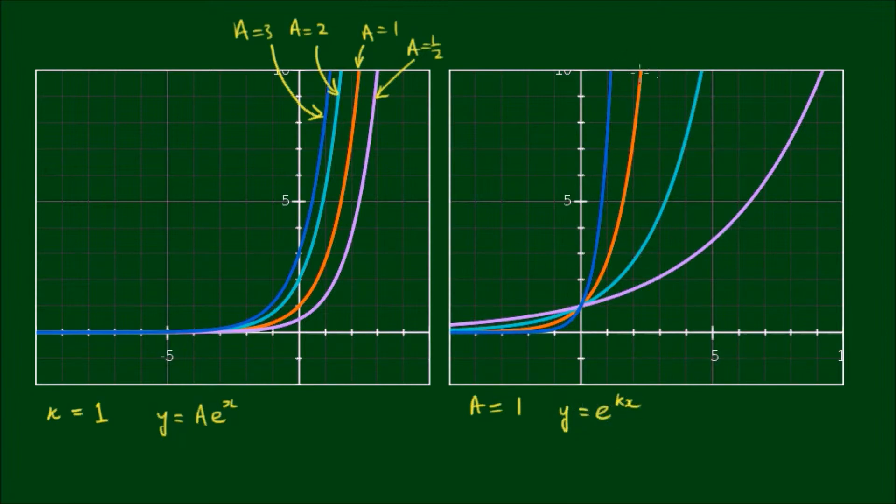The orange curve is when k equals 1, the cyan curve is when k equals 1/2, the light magenta curve is when k equals 1/4, and the blue curve is when k equals 2.